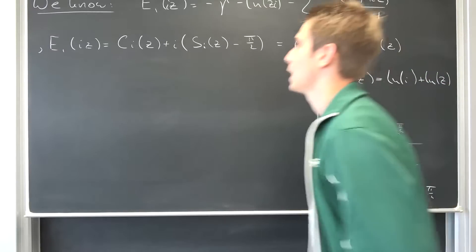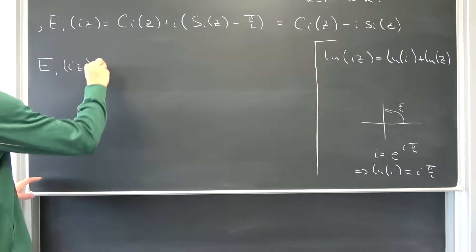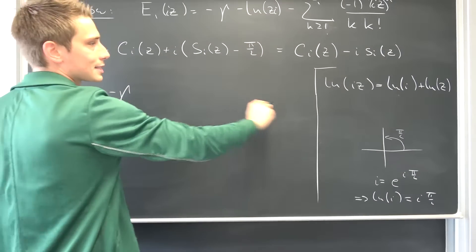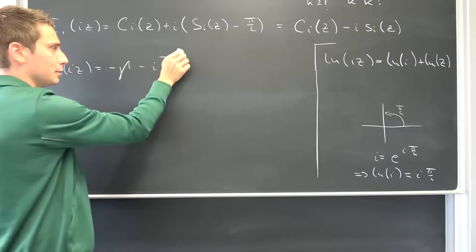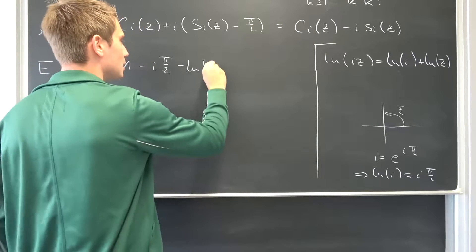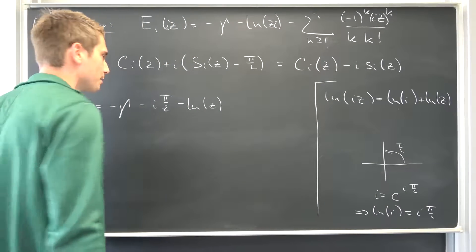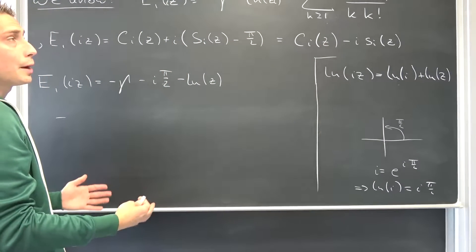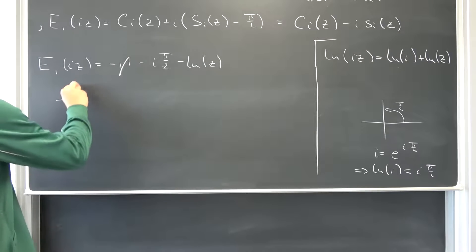Now let us rewrite our E1 of iz. It does nothing but give us: negative Euler-Mascheroni constant, then we push the negative sign into both parts — so negative i times pi over 2, and we have extracted a little imaginary part already, and then minus the natural logarithm of z. Also we have the series right here and I would like to write everything out and then rearrange. This is now our series. We are going to write everything out by using the powers of i.